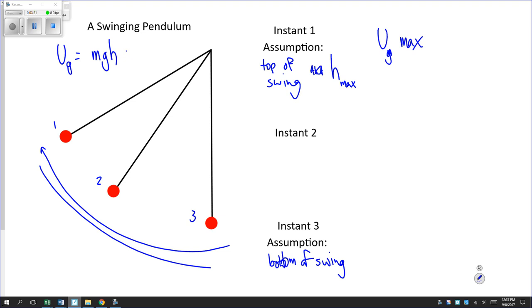At instant 3, bottom of swing, h minimum, that must mean that Ug, the gravitational potential energy of the pendulum-Earth system, is by definition at its minimum.